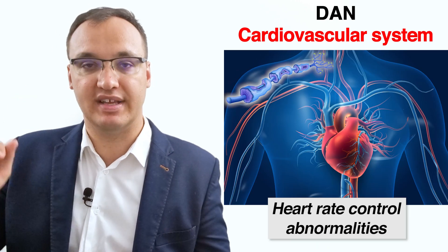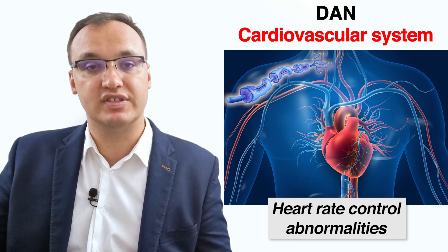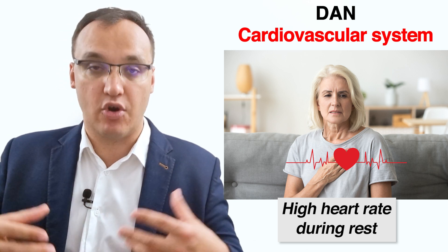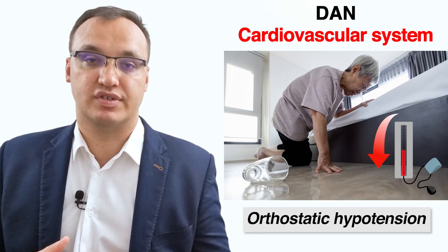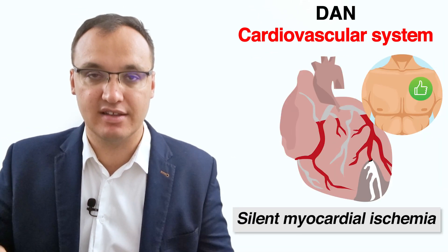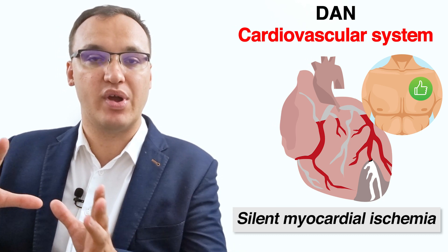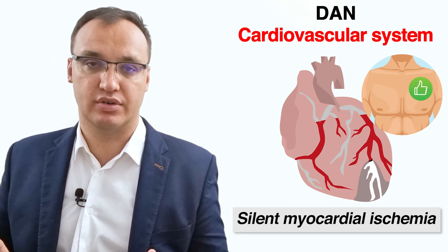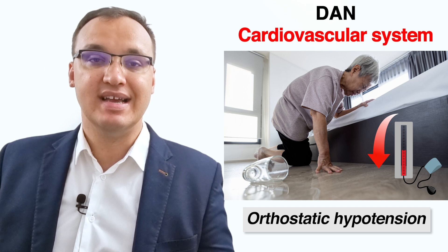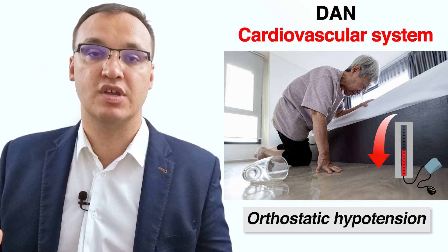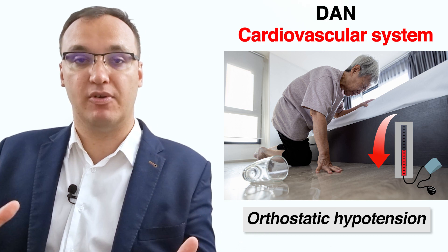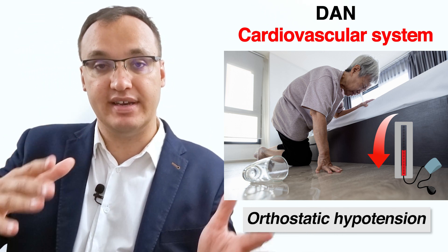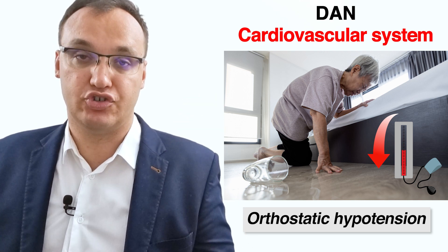Autonomic fibers connected to the heart and blood vessels result in heart rate control abnormalities. Such damage includes a high heart rate during rest, exercise intolerance, silent myocardial ischemia, and orthostatic hypotension. Silent myocardial ischemia is a condition where we have reduced oxygen-rich blood flow to the heart, occurring in the absence of any chest discomfort. Orthostatic hypotension is a fall in blood pressure in response to a change in body position — for example, from lying down and then standing quickly.